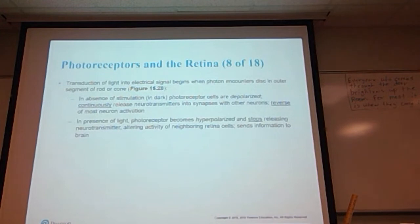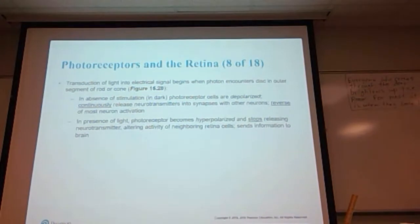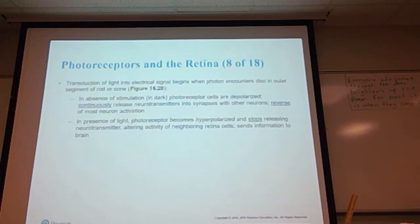Transduction of light into electrical signals begins when a photon encounters a disc in the outer segment of the rod or cone. In the absence of stimulation — in the dark, for instance — photoreceptor cells are depolarized. They continuously release neurotransmitters into the synapses with other neurons. This is the reverse of most neuron activation — most of the time it takes a stimulus to release neurotransmitters, but here they are continuously being released.